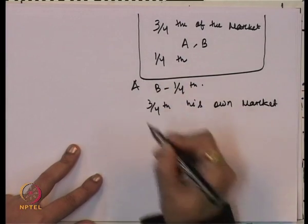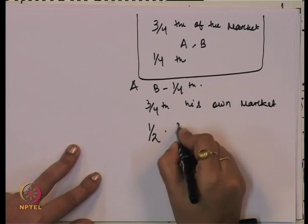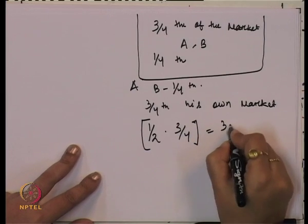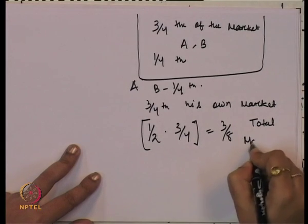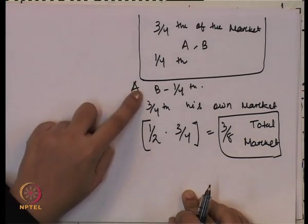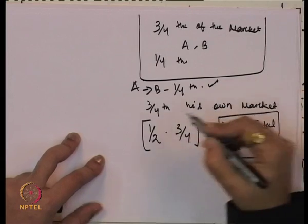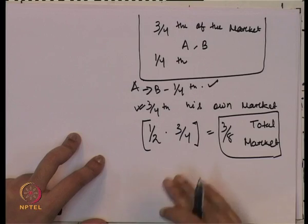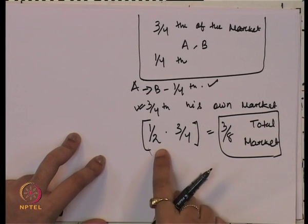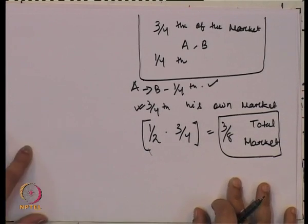Since A treats three-fourths as its own market and produces only half of it, A will produce half of three-fourths, which comes to three-eighths of the total market. So firm A is going to produce three-eighths of the total market, assuming B will produce only one-fourth.